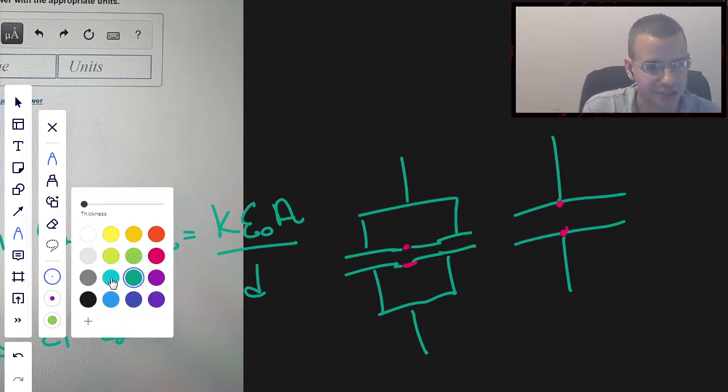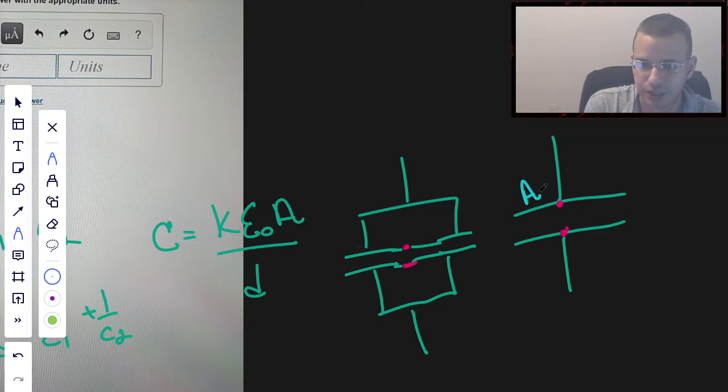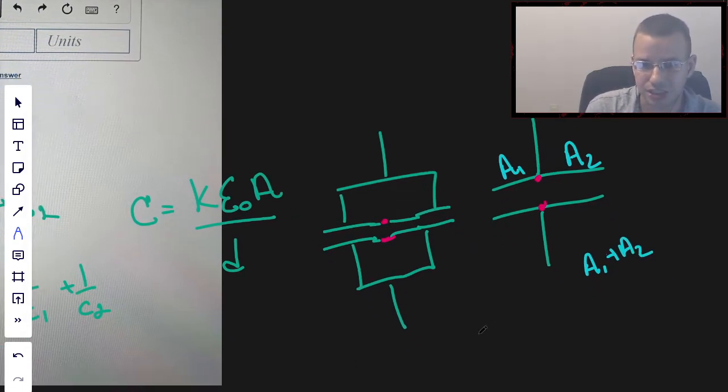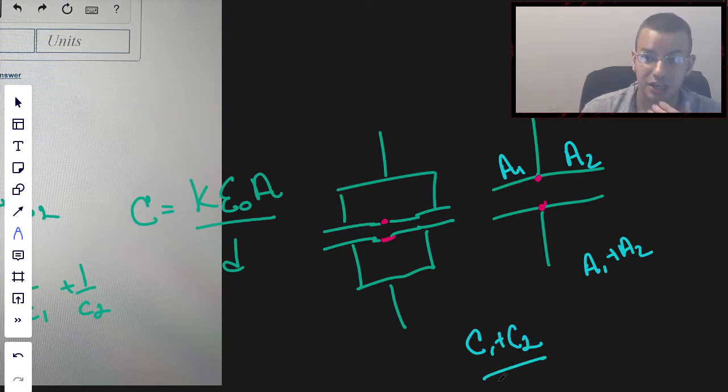So it makes sense that to find the area of this super capacitor we just created, this combined equivalent capacitor, we just add the areas. Area one plus area two, so A1 plus A2. And this is how we combine capacitors that are in parallel. It's literally C1 plus C2. That's the concept.